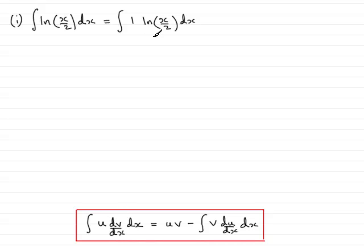Now when you're doing natural log types, what we do is we always nominate the natural log to be the u part. So this will be the u and the 1 will be the dv dx. So I'll just write that in there as a reminder.